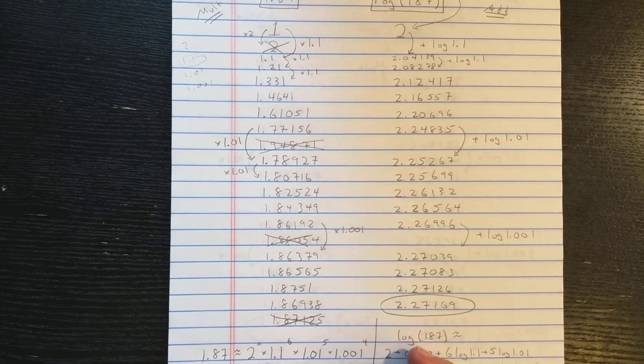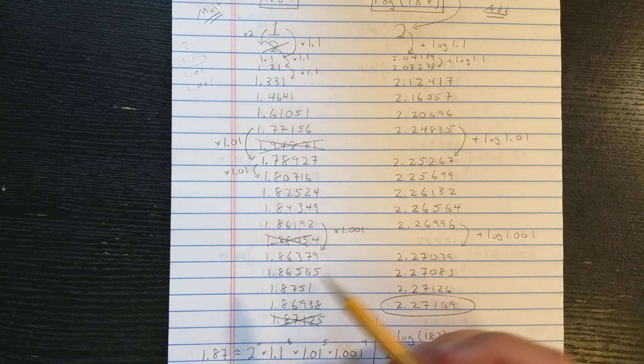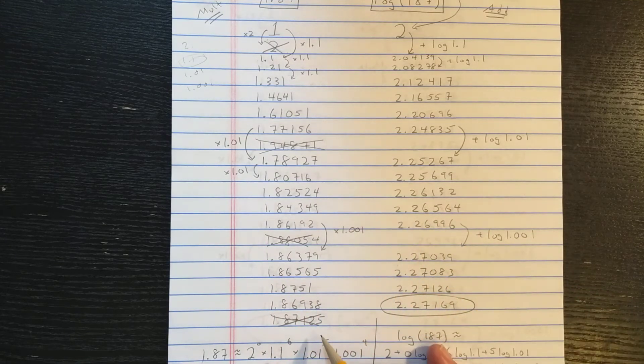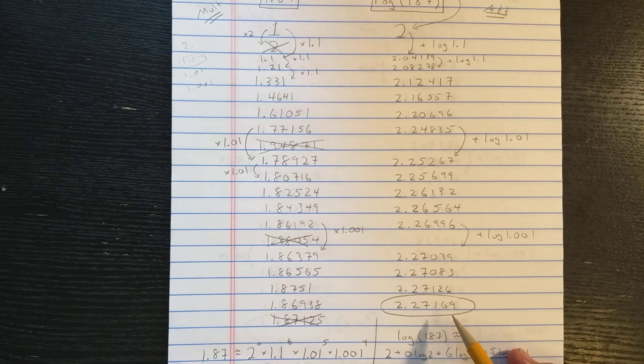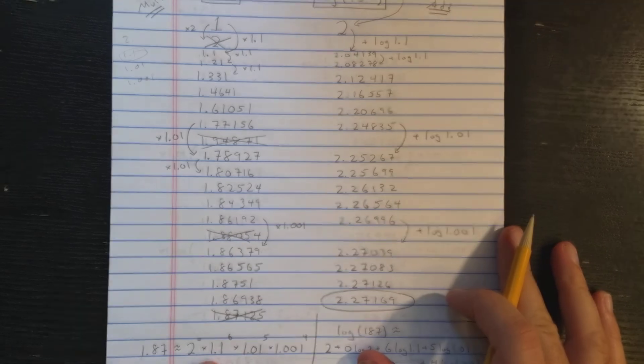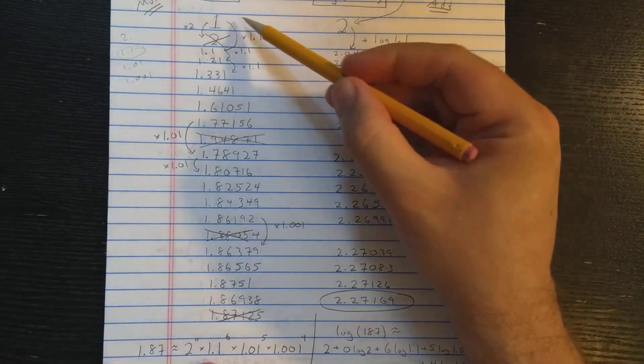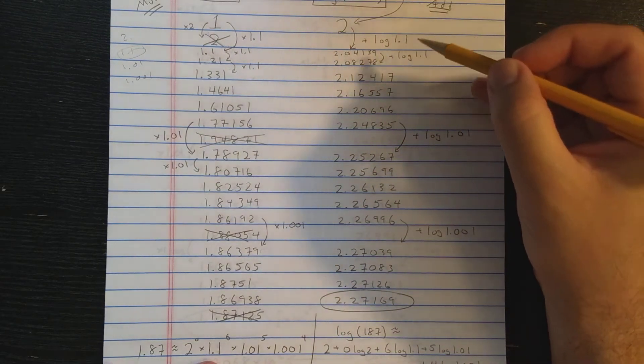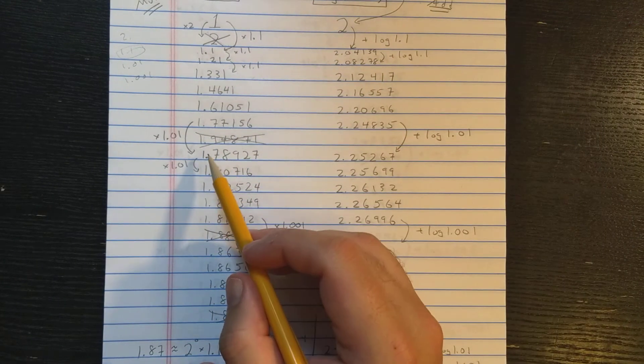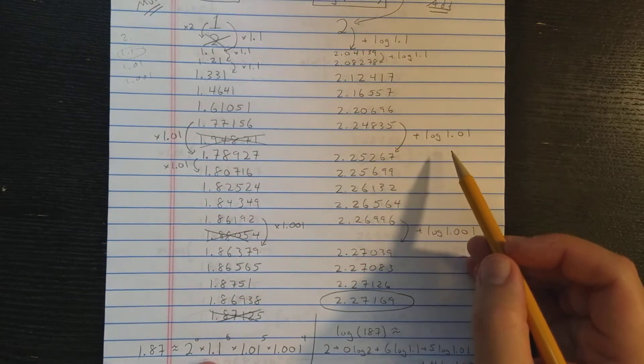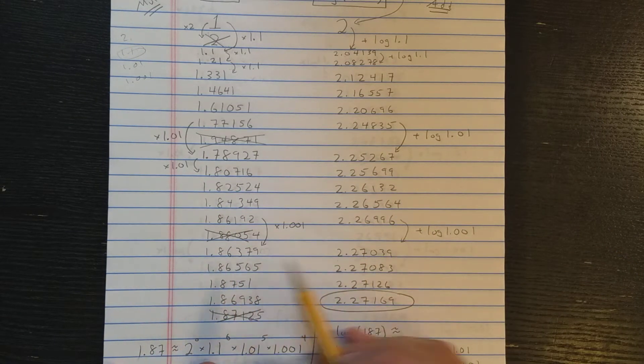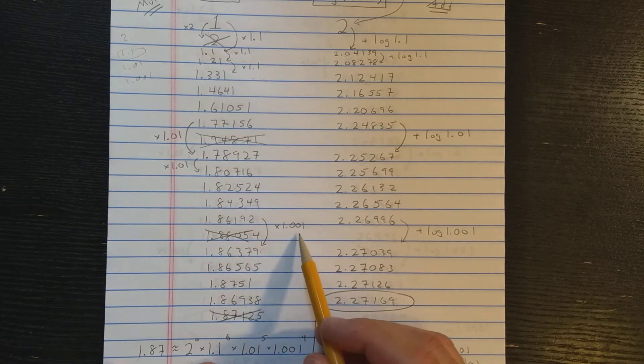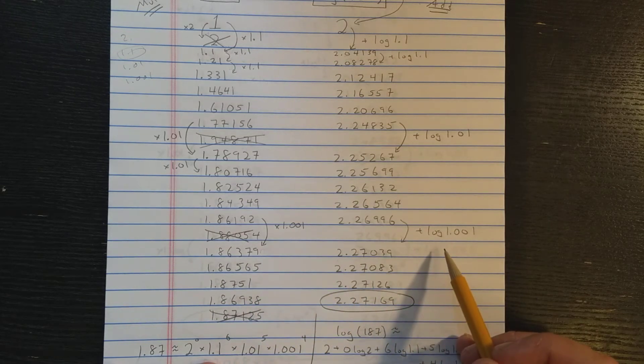The real secret though is while you've been doing this, you've also been computing the second column. So by the time you're done here, you're also done here with computing the logarithm. Let's see how that works. So every time you multiply by 1.1, you add log of 1.1. Every time you multiply by 1.01, you add logarithm of 1.01. And every time you multiply by 1.001, you add that logarithm.